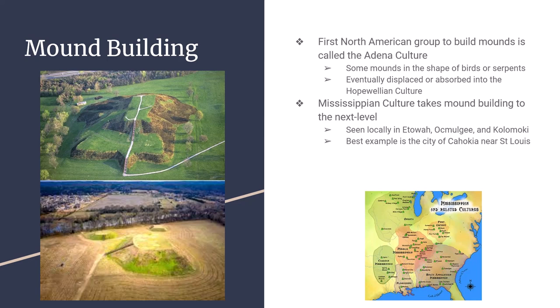The largest known Mississippian cultural site is the city of Cahokia, on the Mississippi River near St. Louis. Rediscovered in the early 1900s, research shows it was a city of probably 15,000 people. Archaeologists found remains of mounds, burials, a Stonehenge-like wooden figure, a giant surrounding wall, and even evidence of human sacrifice in some burial sites.